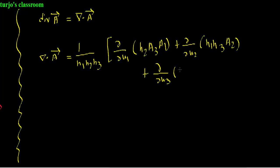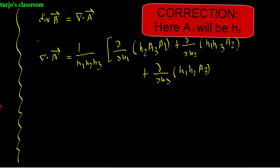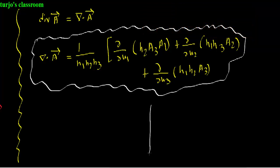Now, in terms of metric conversion coefficient, the divergence of a vector field, or nabla dot A, becomes this. Here h1, h2, and h3 are the metric conversion coefficients, and u1, u2, and u3 are the space coordinates of the respective coordinate system.